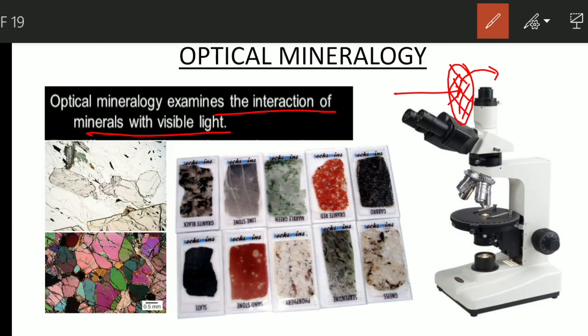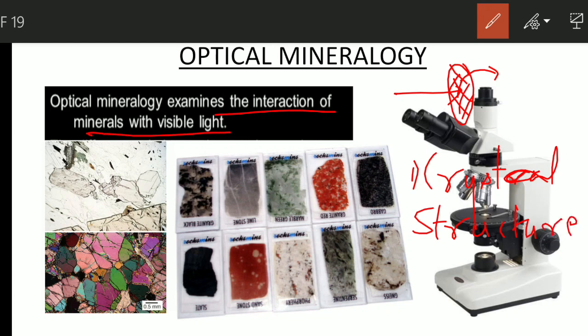When minerals interact with light, different minerals respond differently. We use these differences to identify the minerals. These differences occur due to the crystal structure and chemical constituents of the mineral — the internal properties of the mineral. The response depends on the internal properties of the mineral like crystal structure and chemical constituents.